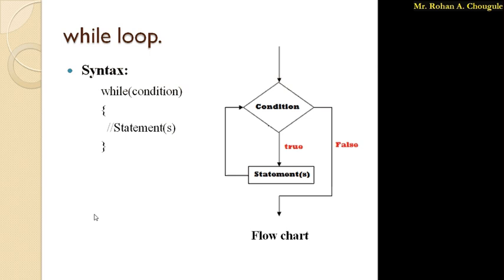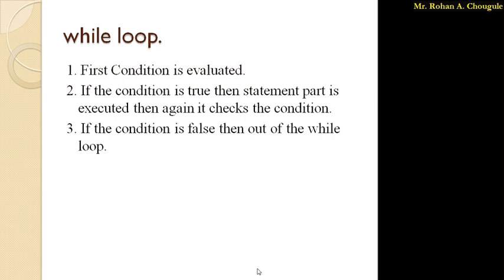After execution of the statements, control moves back towards the condition and checks it again. If condition is true again, it comes inside the while loop and executes all the statements. This process continues till the condition is true. Once the condition becomes false, control moves outside the while loop and executes any statements written after the while loop.